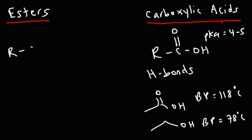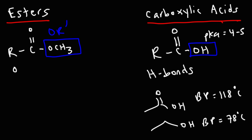Esters look very similar to carboxylic acids, but instead of a hydroxyl group, you have an alkoxy group — so instead of OH, you have OR. Esters do not have hydrogen bonds like carboxylic acids, and therefore have a lower boiling point. Esters are known for their pleasant odors and are typically used in fragrances, perfumes, and other cosmetic products.